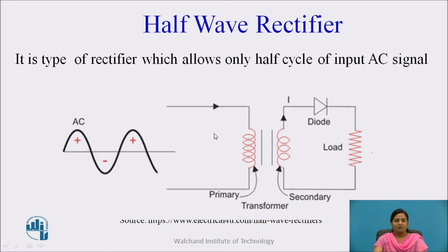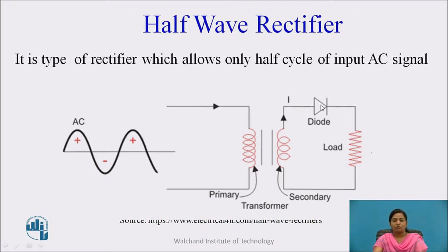This is the half wave rectifier circuit. The AC source provides AC supply to the transformer, and AC source is generally represented by a sinusoidal wave. In a half wave rectifier, a step-down transformer is used where the number of turns in the primary winding is greater than the number of turns in the secondary winding. This step-down transformer is used because the diode in the circuit requires very low voltage compared to the input AC voltage. If direct AC voltage is given to the diode, it will be destroyed permanently. So the high AC voltage is converted into low-level AC voltage using the step-down transformer.